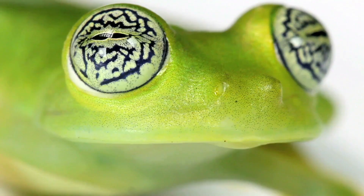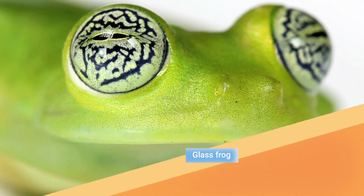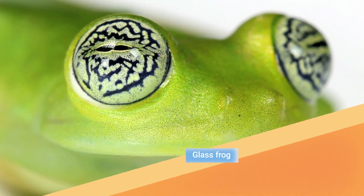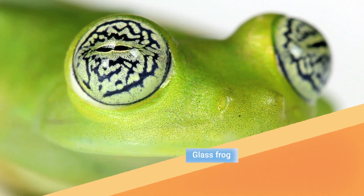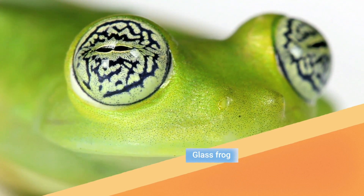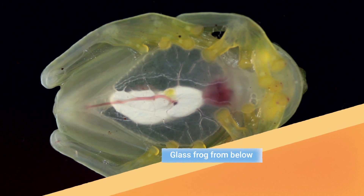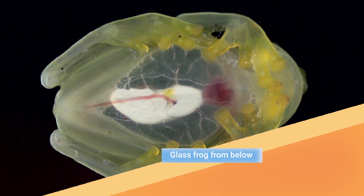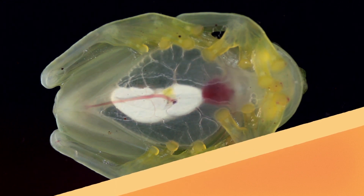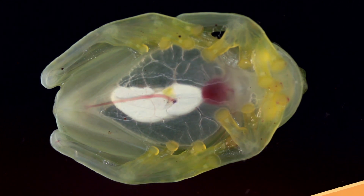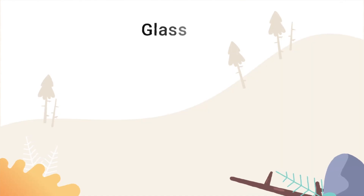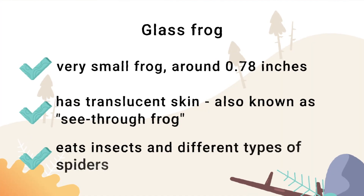Here you can see the eyes of a glass frog. A glass frog has translucent skin and here you can see its organs. These frogs are very small and eat insects and different kinds of spiders.